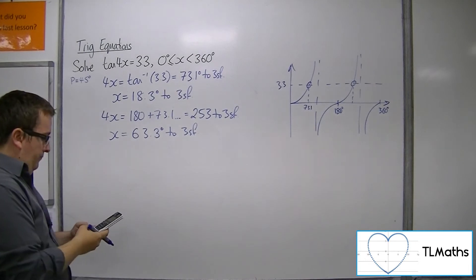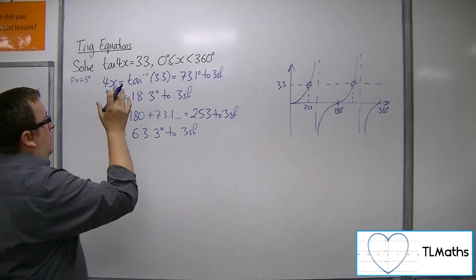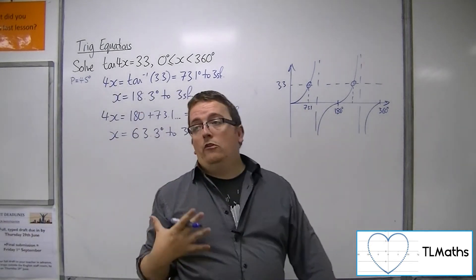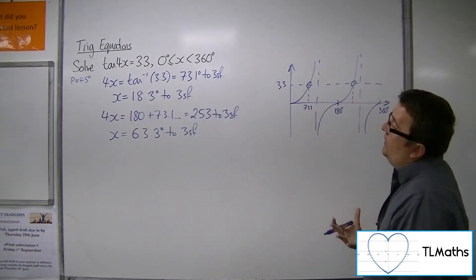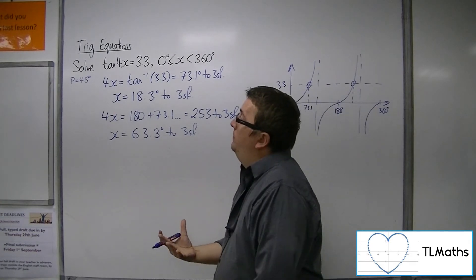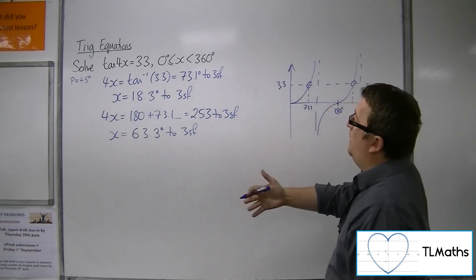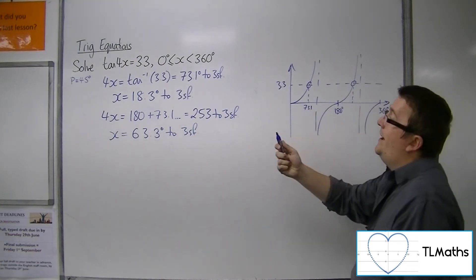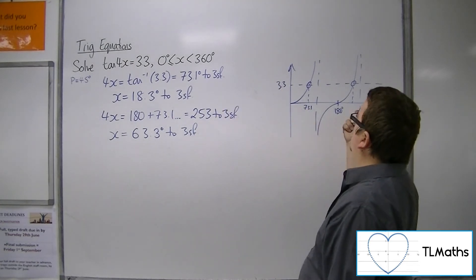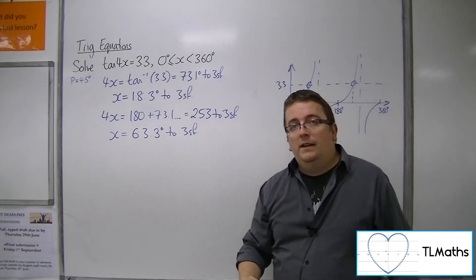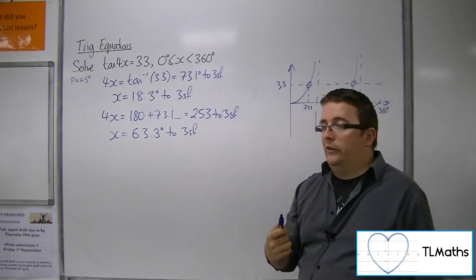So now these are 45 degrees apart, the period of tan. So these are two solutions to the problem, but we would be expecting more. We would expect between 0 and 360 for tan x equals 3.3 to have these two solutions. Because it's been stretched by a factor of a quarter, we would now expect there to be 8 solutions altogether.